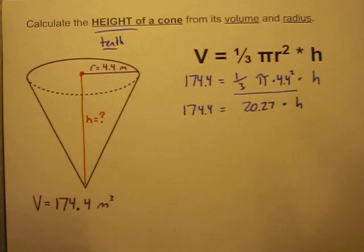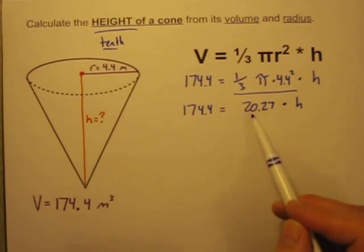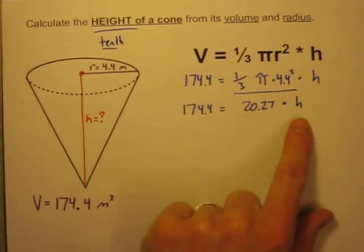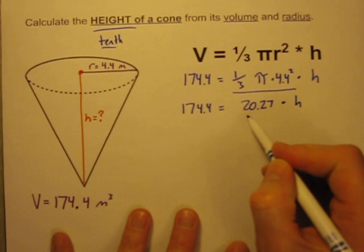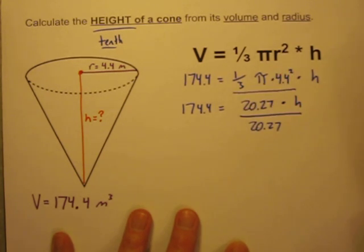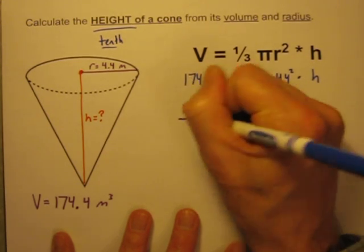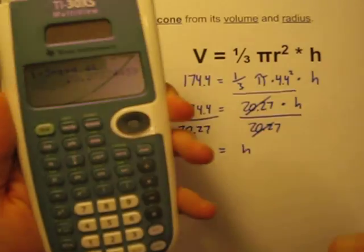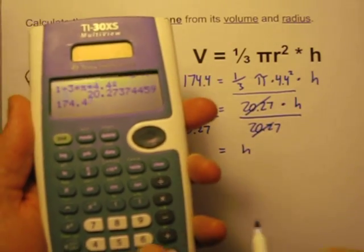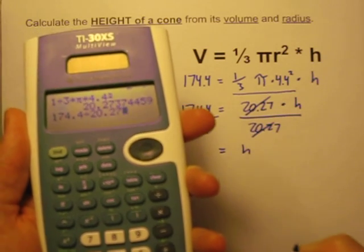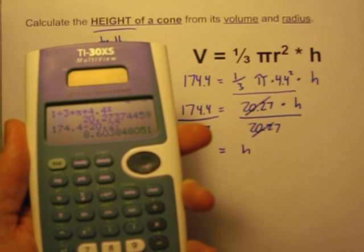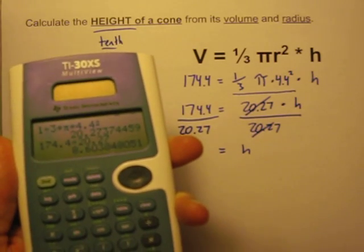The flaw in this method is I have to round my answers a few times before I get to my final answer. The more times you round, there's a greater chance your final answer might be a little bit off. So I'm rounding to the nearest hundredth rather than nearest tenth to minimize that problem. Now I have 174.4 equals 20.27 times h. To solve for h, I divide both sides by 20.27. That gives me 174.4 divided by 20.27, which equals 8.60.